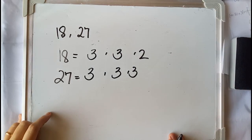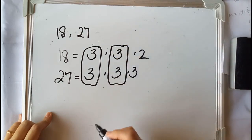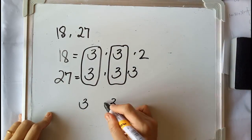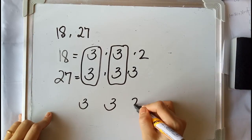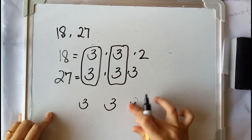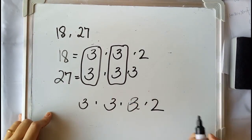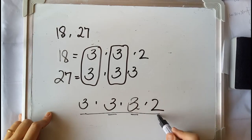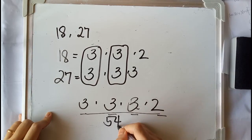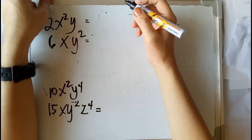After you factor each number, find out if there are common factors. Here we have common 3 and another common 3. So write down the common factors and then copy the remaining factors of each number. After that, multiply these numbers: 3 times 3 times 3 times 2 is equal to 54. So the LCM of 18 and 27 is 54.